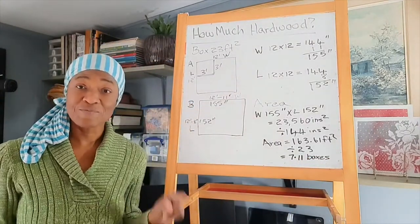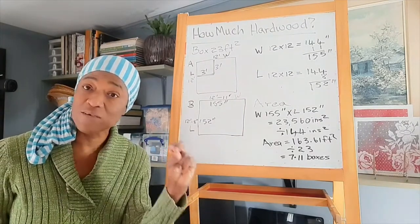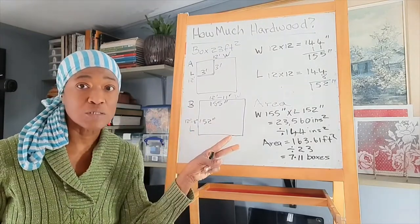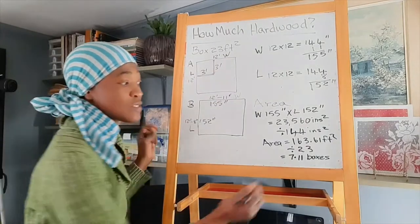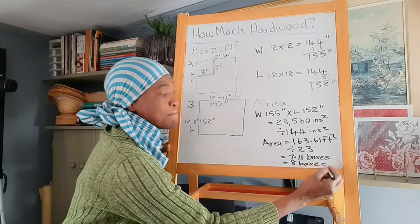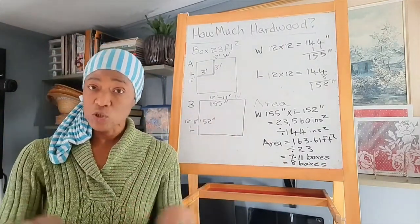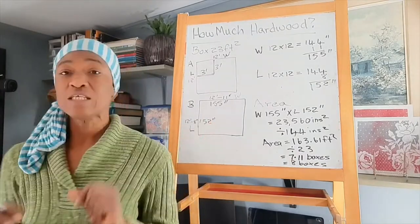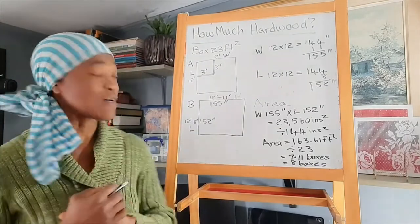So that's 7.11 boxes of wood. So we have to round up. We need that wood. So we never round down, we round up. So we will need eight boxes of wood. And that eight boxes should cover for that 10% overage. So we don't need to add anything else to that eight boxes of wood.